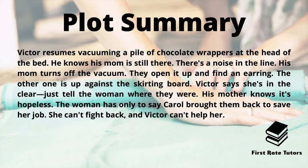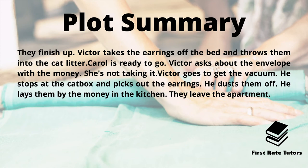Victor resumes vacuuming and finds a pile of chocolate wrappers at the head of the bed. There's a noise in the vacuum line and his mother turns it off. When they open it up they find an earring, and the other one is just up against the skirting board. Victor calls the woman Claire and it's clear his mother was innocent the whole time. He asks his mother to tell the woman where they were, but Carol knows it's a hopeless situation — the woman has only to say Carol brought them back to save her job. Victor feels helpless as he can't help her. They finish up. Victor takes the earrings off the bed and throws them into the cat litter, but then goes back, picks them out, dusts them off, and lays them by the money in the kitchen. His mother refuses to take the money. They then leave the apartment.